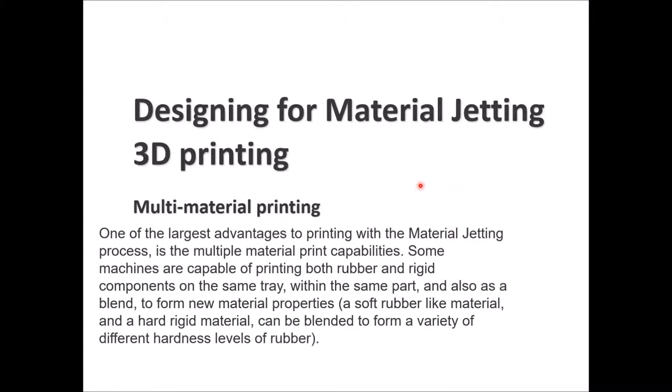The advantage of multi-color printing is that you can have the colors and patterns you want on your parts directly through CAD software, print it, and get the result as needed. Some machines of this technology can print rubber and rigid components on the same tray, within the same part, or as a blend — allowing you to create new material properties, either softer rubber or hard rigid material, by combining materials as needed.